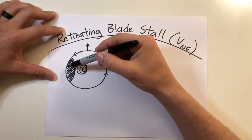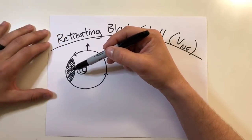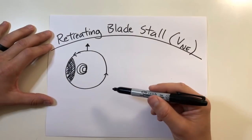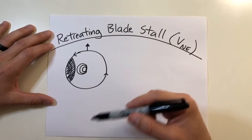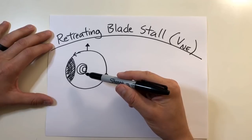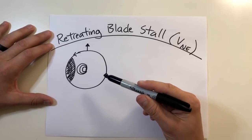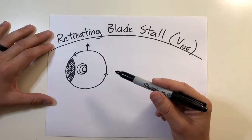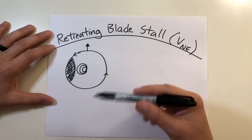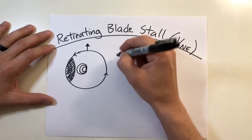This positive stall region is experienced on the retreating side only, and it's due to the greater angles of attack during high forward air speeds. If a pilot does not understand the effects of flying into this condition, he or she could soon experience a violent change in aircraft pitch and roll, as well as a temporary loss of control of the aircraft's flight path. So what are some of the things that cause a retreating blade stall condition?